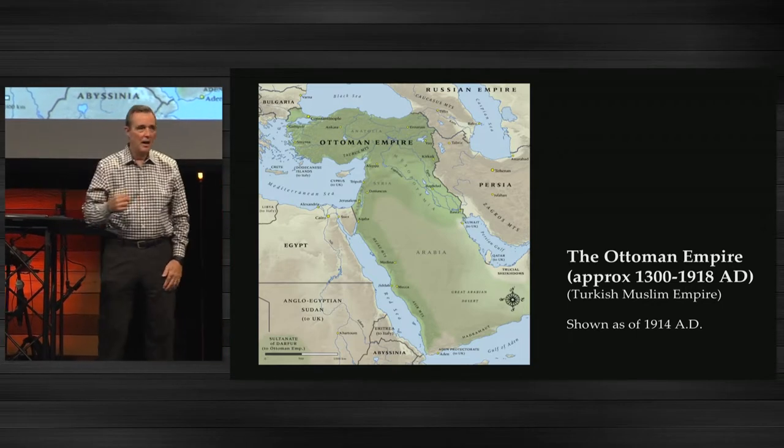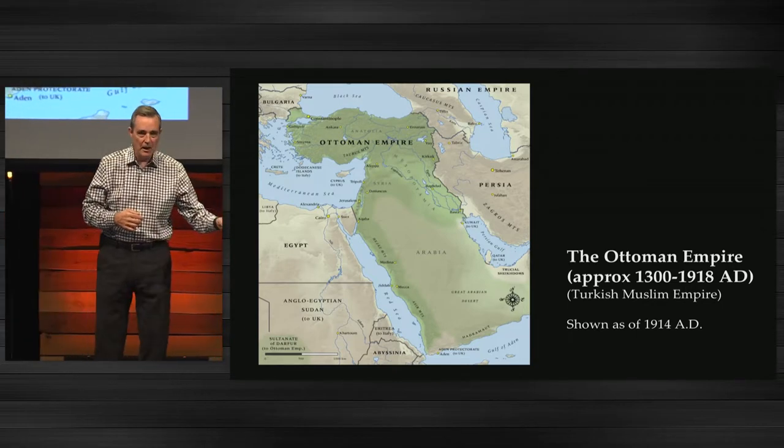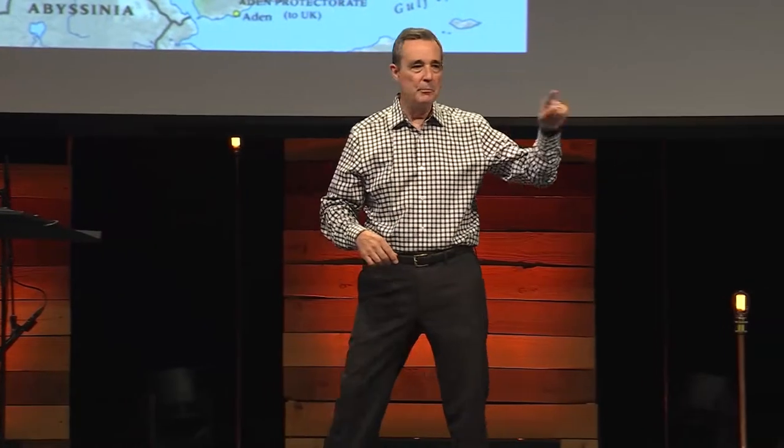And third: religion. You can be an Arab and be a Christian, you can be secular, you can be an atheist, you can be an Arab and be Muslim. So you have ethnicity, culture, and religion — three different things. Nobody fits in nice, neat little buckets. That's a good way of thinking about the whole world, and certainly here in the Middle East.